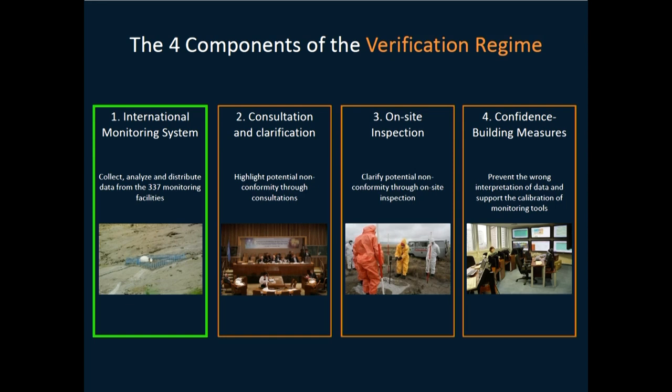So why do we need a verification regime? Because we need to monitor the compliance of member states with the treaty when it will come into force. For that, we need to be able to detect nuclear tests. We have the first pillar of the verification regime: the international monitoring system, which is used to collect, analyze, and distribute data from 337 monitoring facilities. Very much like in the case of the presentations by the ESA on Monday, we have a similar need — our first source of information is the data we collect from the field so that we can make decisions.